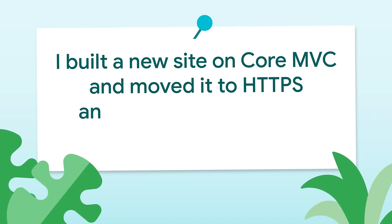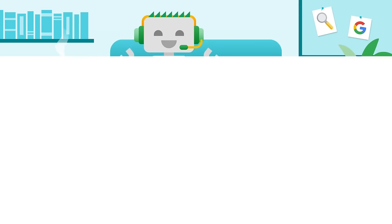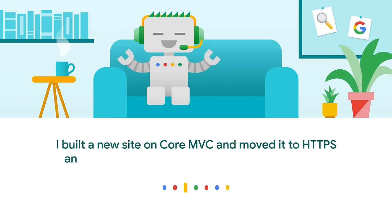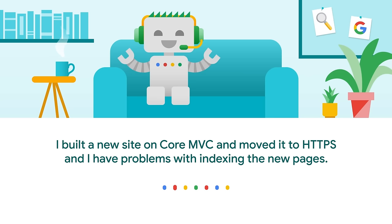Panos asks: I built a new site on Core MVC, moved it to HTTPS, and I have problems with indexing the new pages. I took a look at your site and how it's currently indexed. It looks like your site is actually indexed without the www subdomain. So if you explicitly look for the www version of your site, you won't find much. If you look for the domain alone, such as site:domain.com, then you'll find it indexed.